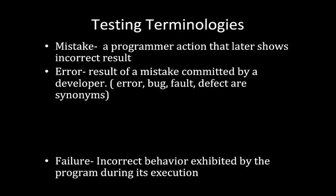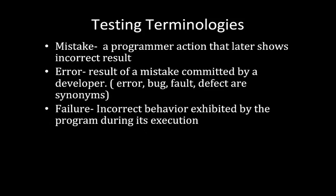The next terminology is 'failure.' Failure of a program denotes incorrect behavior exhibited by the program during its execution. This incorrect behavior might be observed as an incorrect result or an inappropriate activity carried out by the program. Every failure is caused by some errors in the program. Examples of failure include a program crashing on some input, a robot failing to turn rightwards, or colliding with an obstacle.